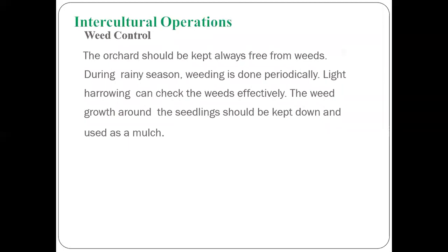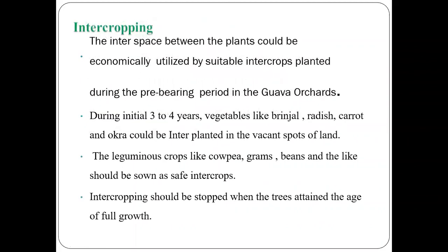The guava orchard should be kept free from weeds. Periodic weeding is done during the rainy season; light harrowing can check weed growth effectively. Mulching can also reduce weed growth. During the initial three to four years, intercropping with vegetables like brinjal, radish, carrot, and leguminous crops like peas, gram, and beans can be done in guava orchards. Once the trees start bearing fruits, intercropping should be stopped.